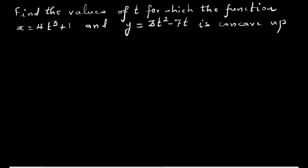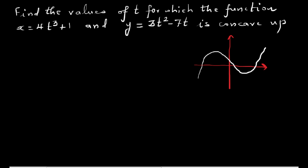Suppose this is your y-axis and this is your x-axis, and we've got a graph like this. This point is called the maximum and this is the minimum, and there's a point somewhere between the maximum and minimum — that is the point of inflection.